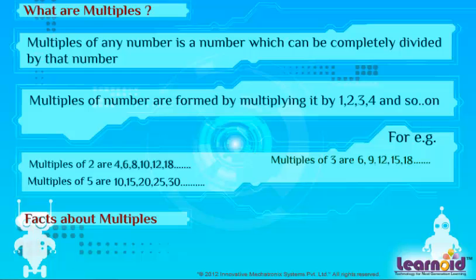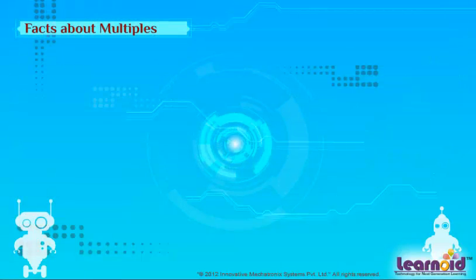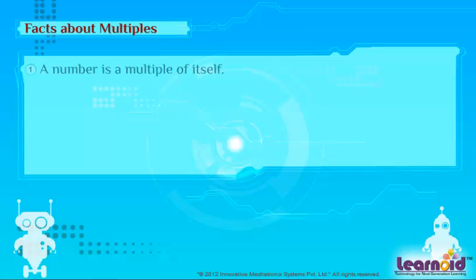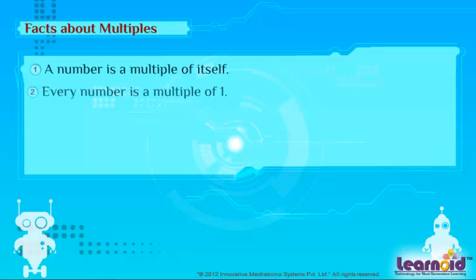Facts About Multiples: A number is a multiple of itself. Every number is a multiple of 1.